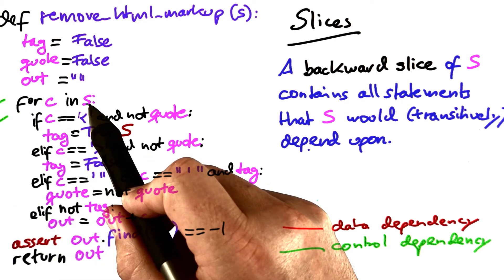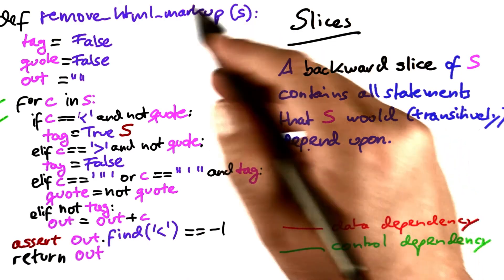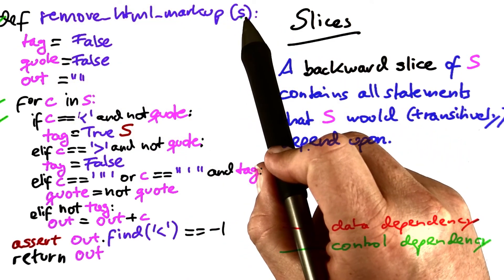And this condition up here reads from the variable s, which is passed as a parameter up here. So this is also part of the backward slice.